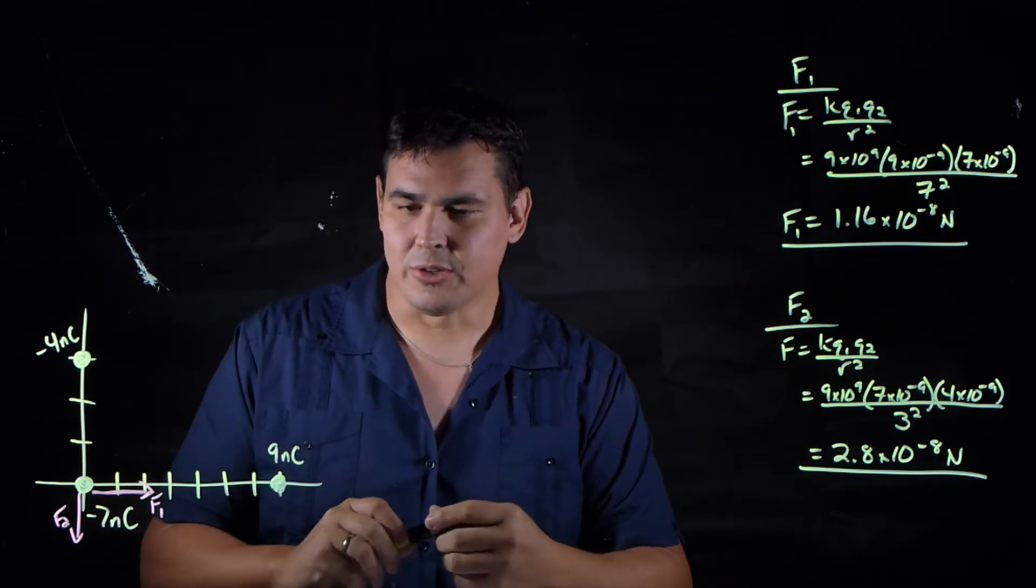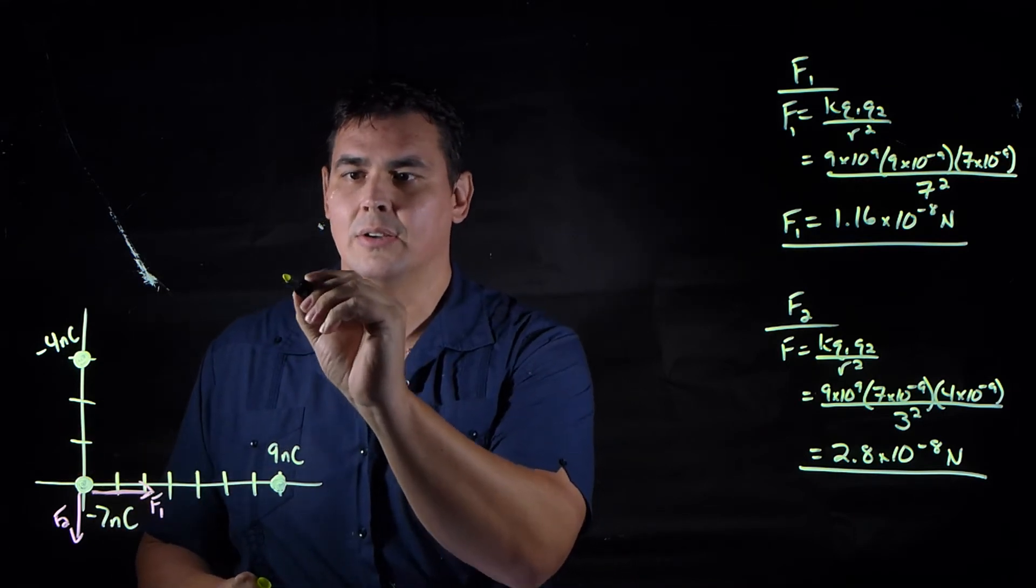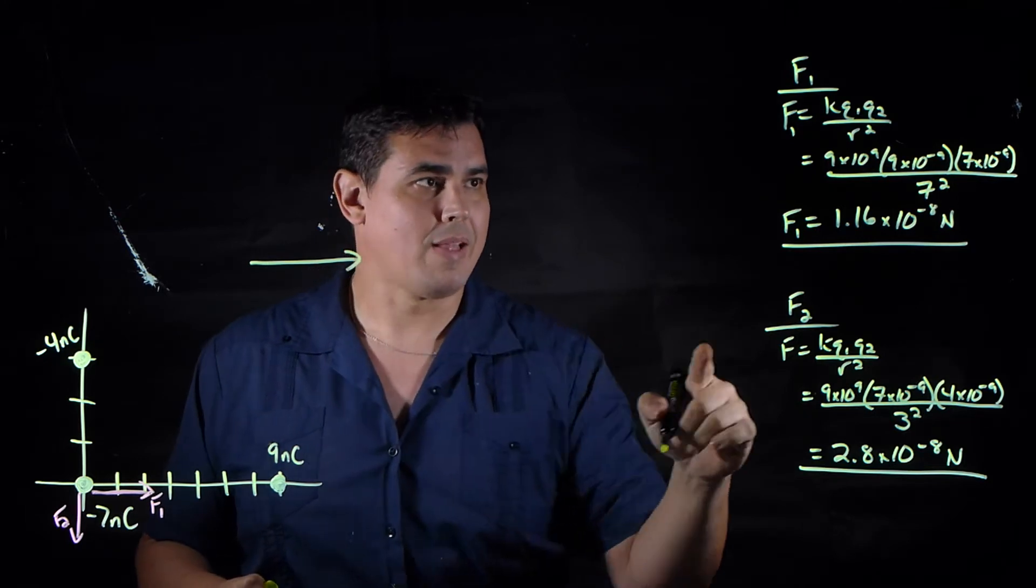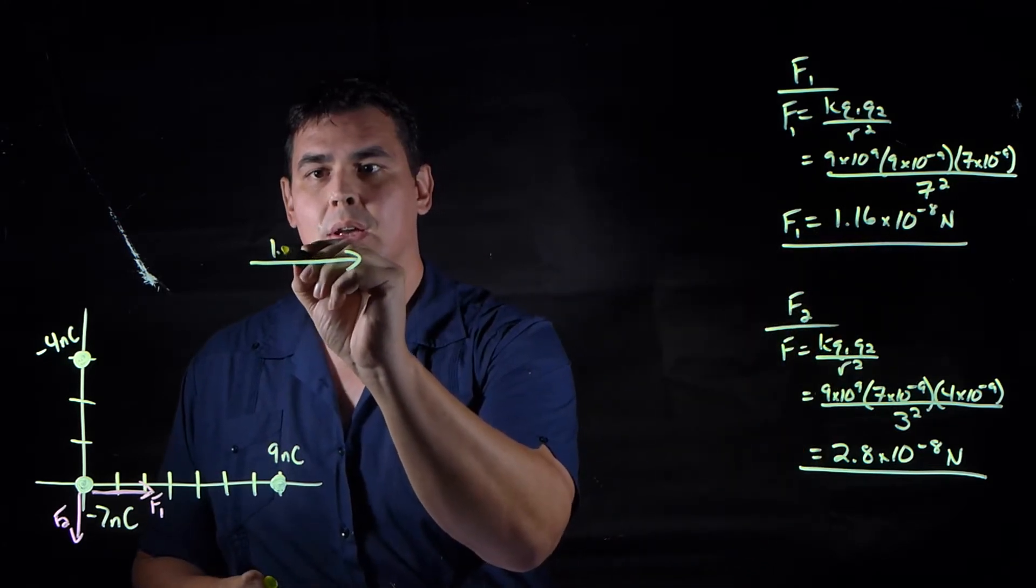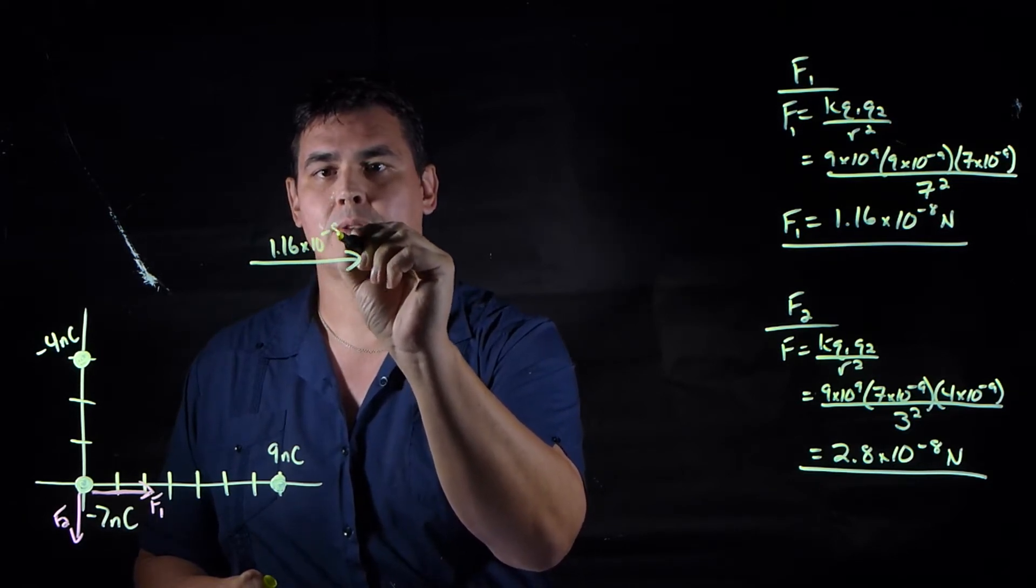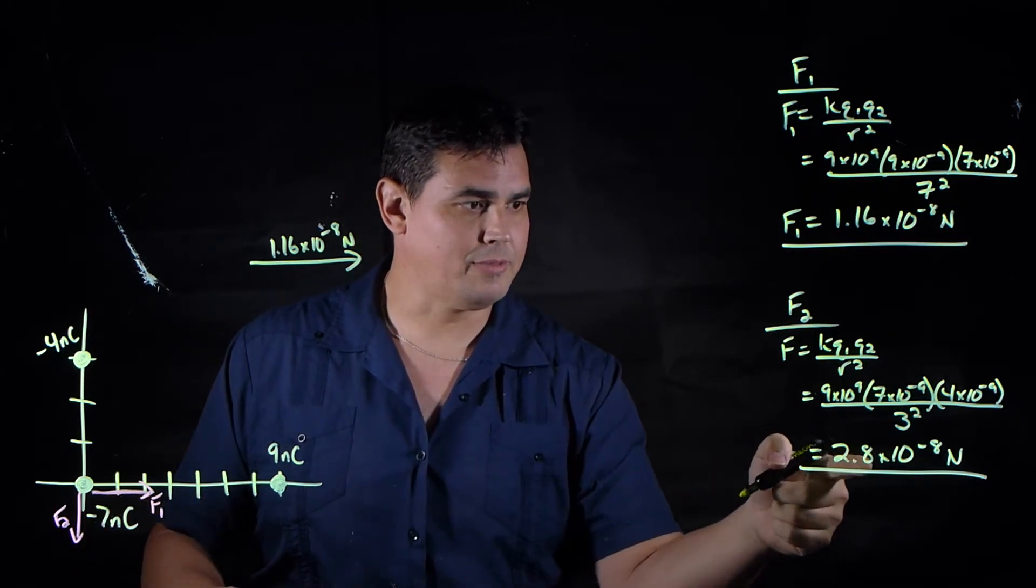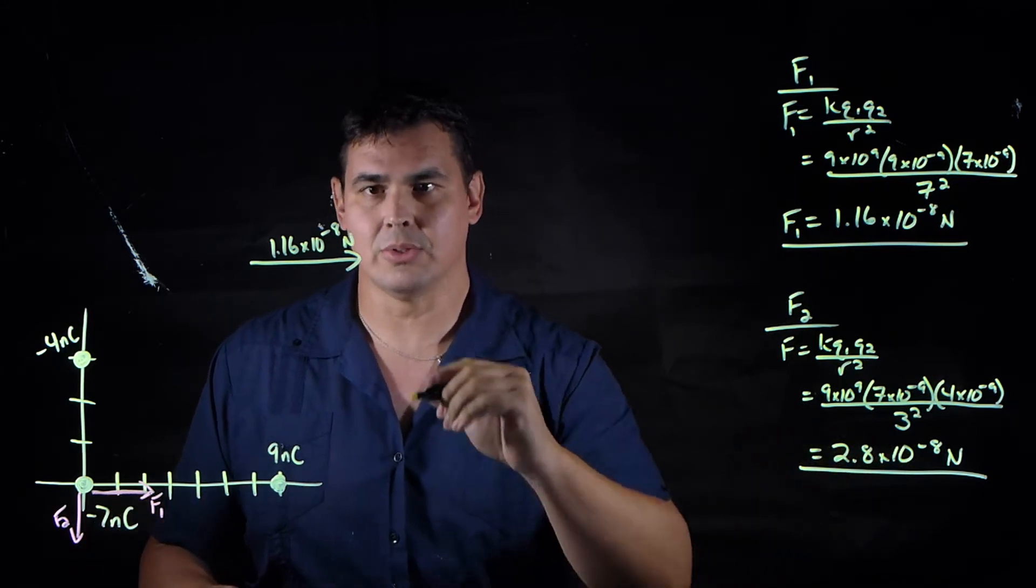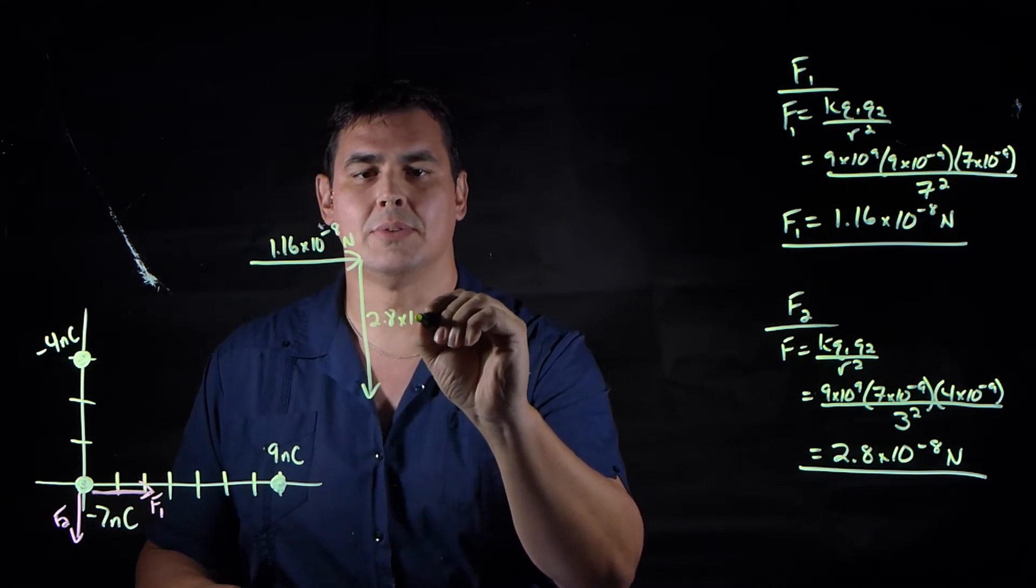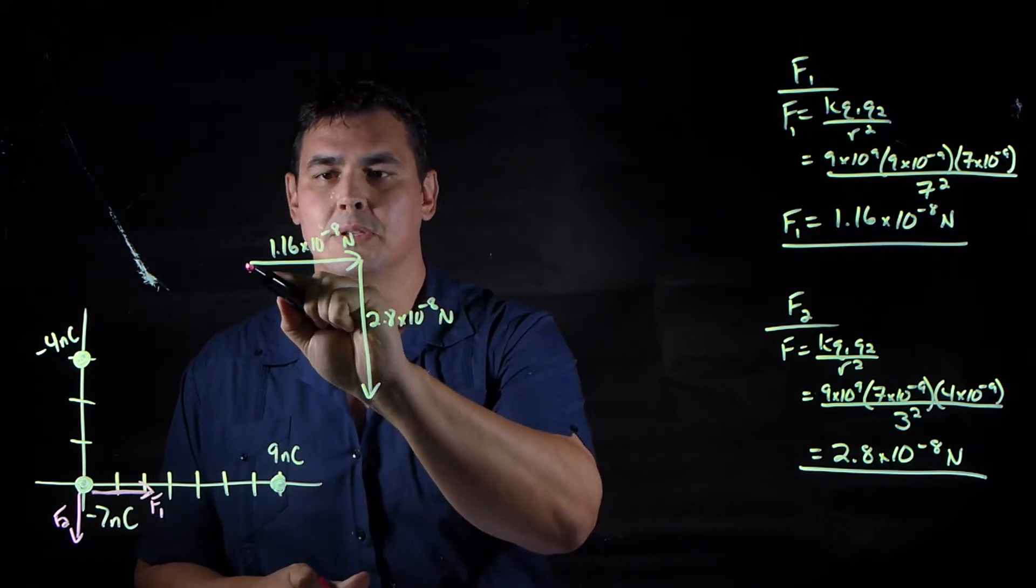Okay, so now let's go draw our vectors and find the net force. I'm going to redraw these right here. This is F1, and F1 is 1.16 times 10 to the minus 8, so I'll draw it on there. Then F2 points down, and F2 is 2.8 times 10 to the minus 8 newtons, so it's going to be a little bit bigger. This is 2.8 times 10 to the minus 8 newtons, so that means my resultant must point this way.